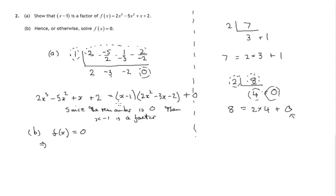this cubic expression, we can write in factorised form as x minus 1 times 2x squared minus 3x minus 2. So we're asked to solve this equation and it may well be possible that this quadratic expression can be factorised further.